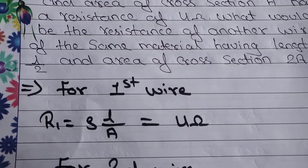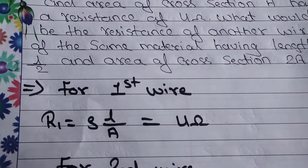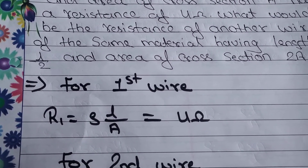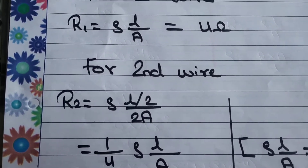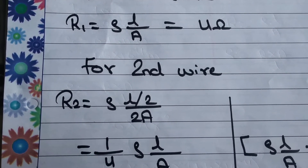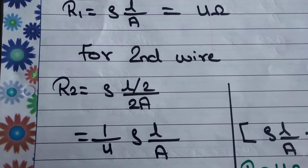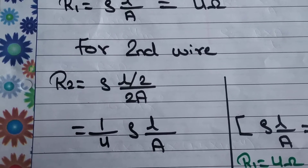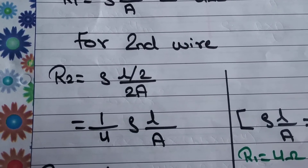Now, for the second wire, the length is half and the area is double. So R2 equals rho times L by 2, upon 2A. This simplifies to one-fourth of rho L upon A.